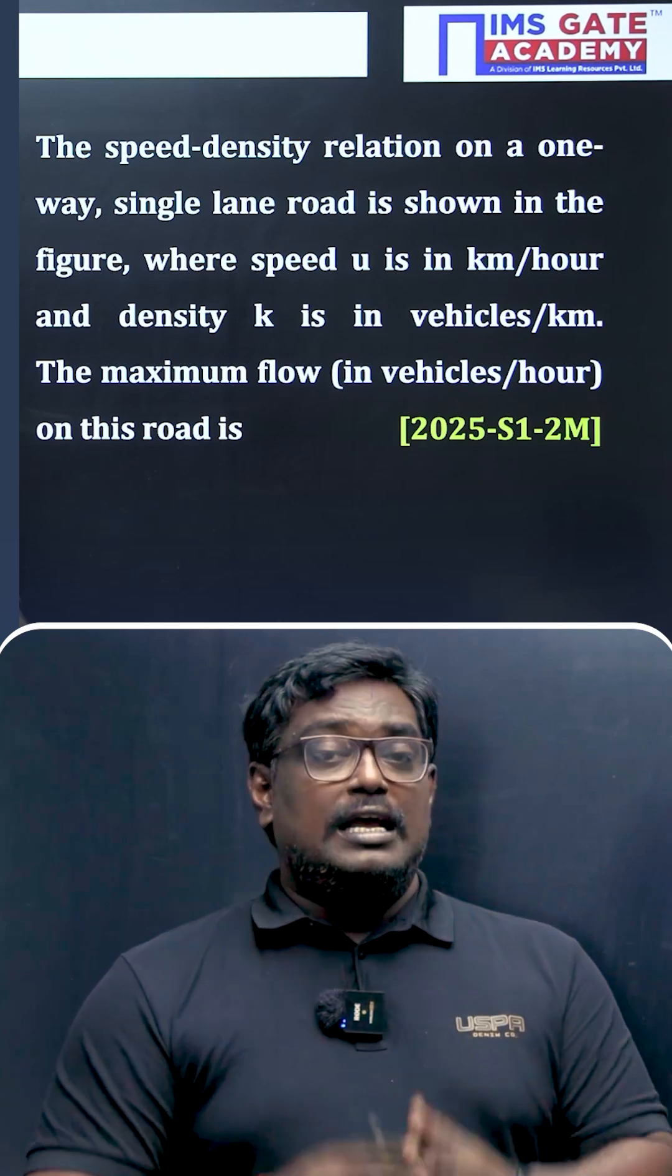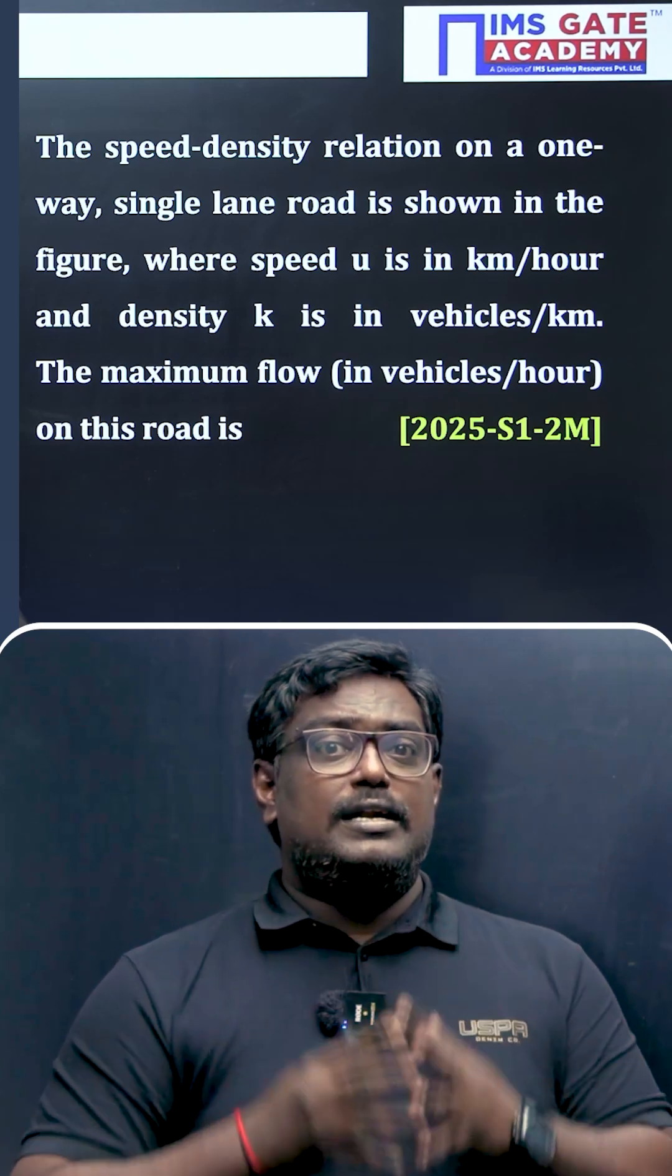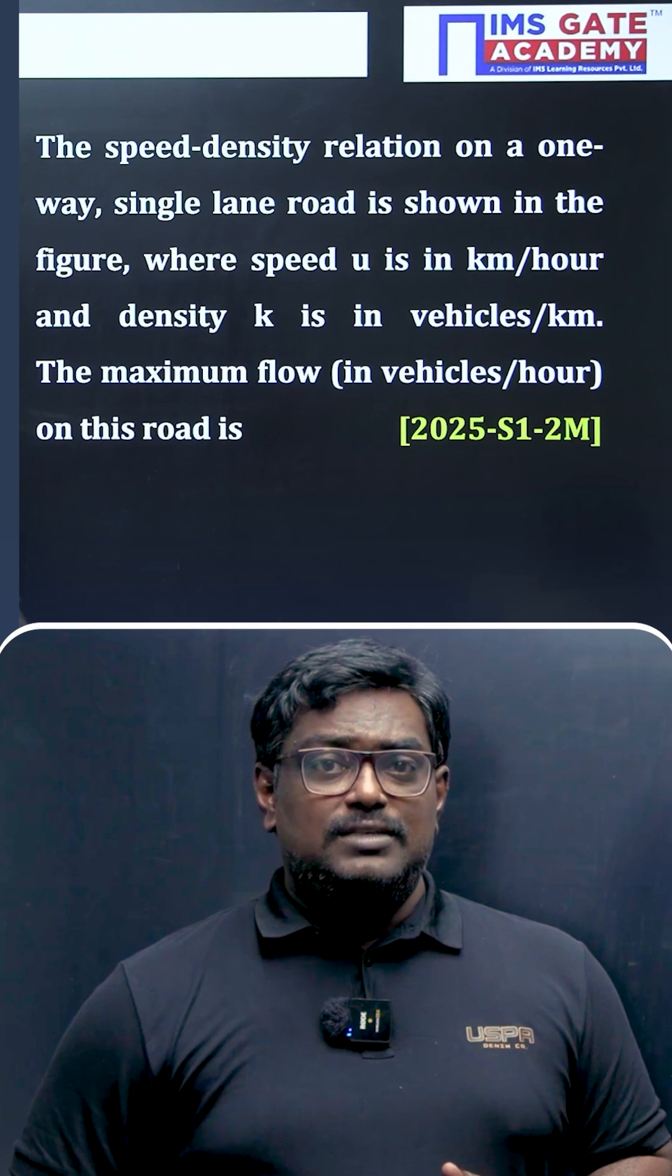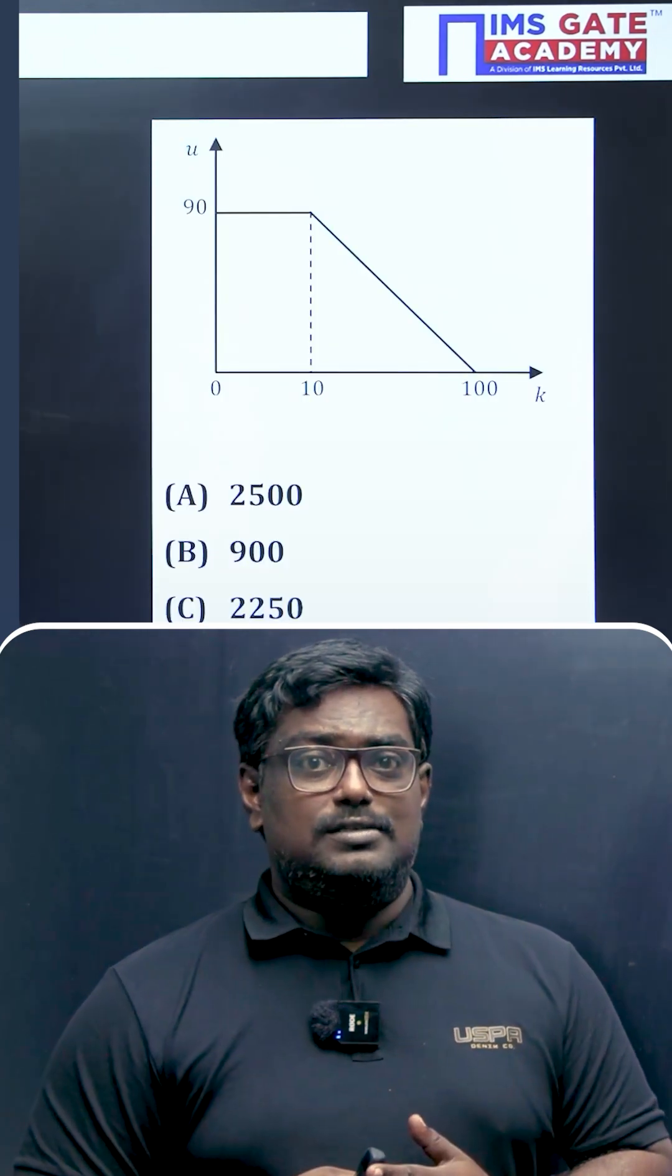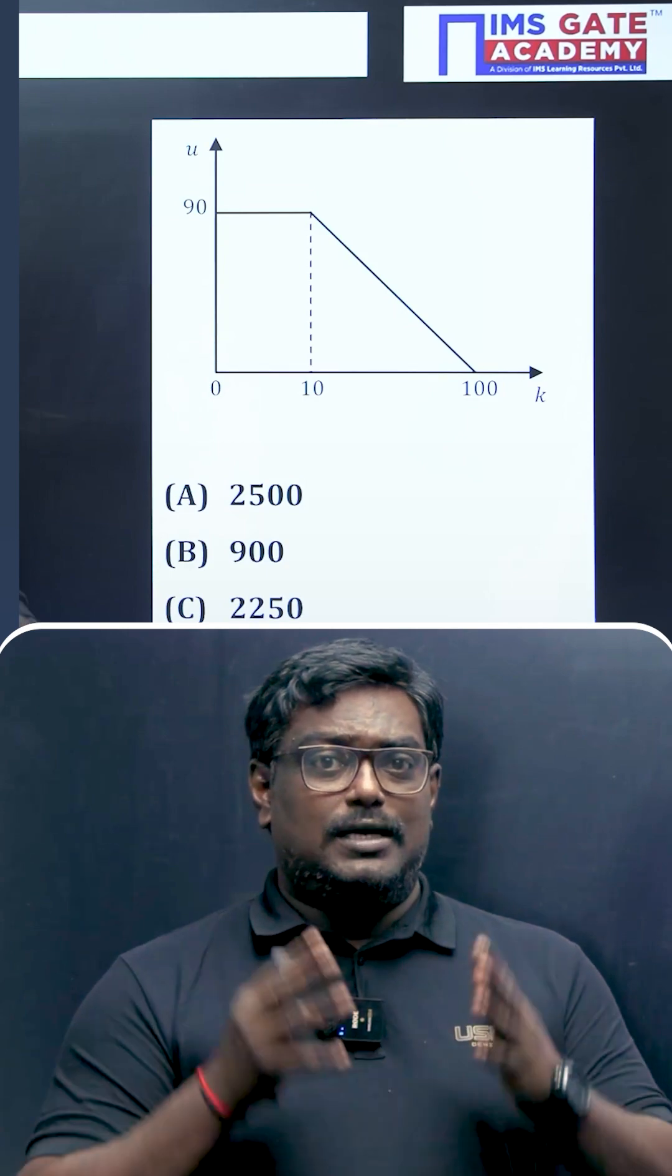Do you want to know the Greenshield model? In Greenshield model, the speed and density varies linearly. Here in this problem, GATE 2025, they have given the diagram - velocity versus density - and the x-axis represents the density.